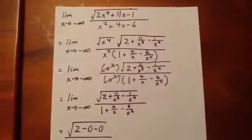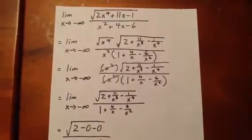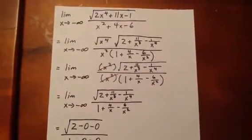In the denominator, we can factor out x squared, and we're left in the second factor with 1 plus 4 over x minus 6 over x squared.